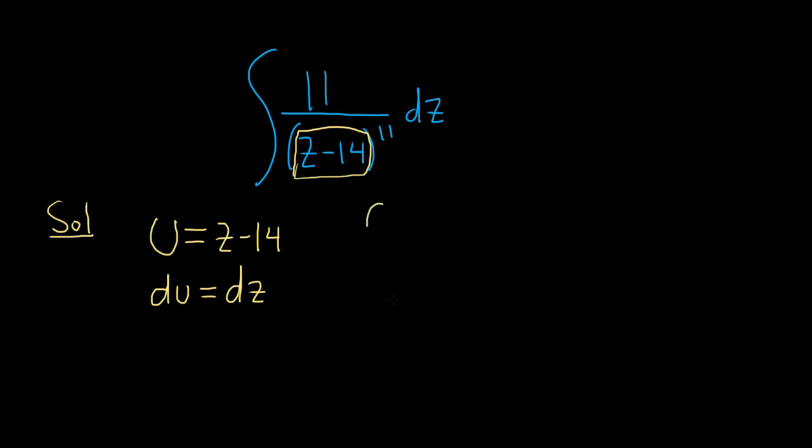Okay, rewriting this, we have the indefinite integral. So the 11 hangs out. You can pull the 11 out, or you can multiply both sides by 11, or you can just let it hang out. I like letting it hang out. It's just easier. And then this is u to the 11, and the dz becomes du.